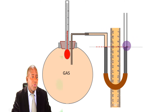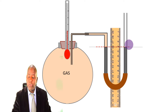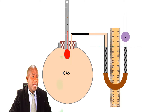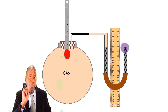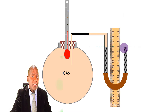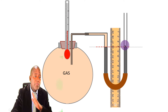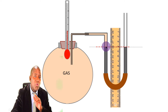The pressure on this surface here is atmospheric pressure, because the tube on the right-hand side is open to the atmosphere. So the pressure acting on this surface is atmospheric pressure. Because of that fact, and the fact that this level is at the same level as the other surface, pressure at this point equals pressure at that point. So if I know that the pressure at this point is atmospheric, then the pressure at the other level is also atmospheric.